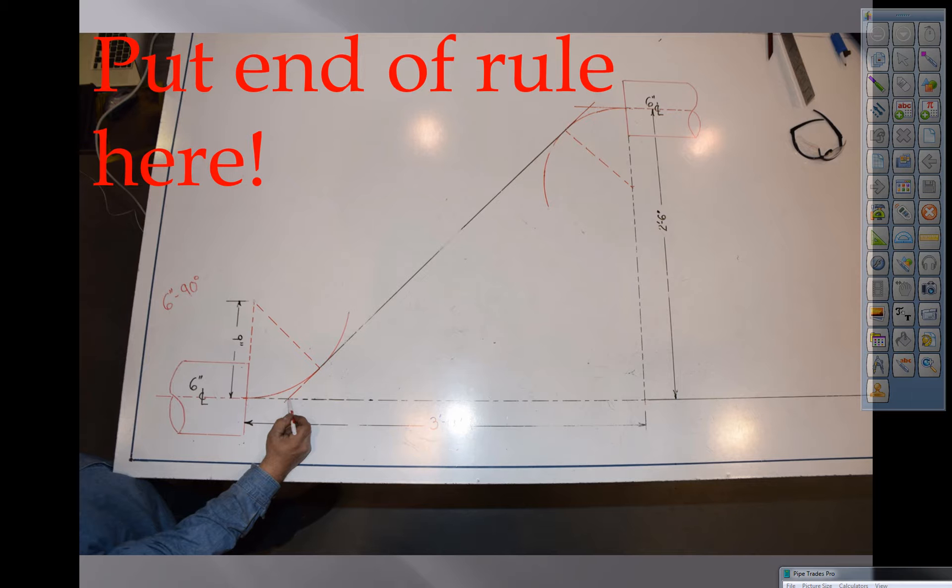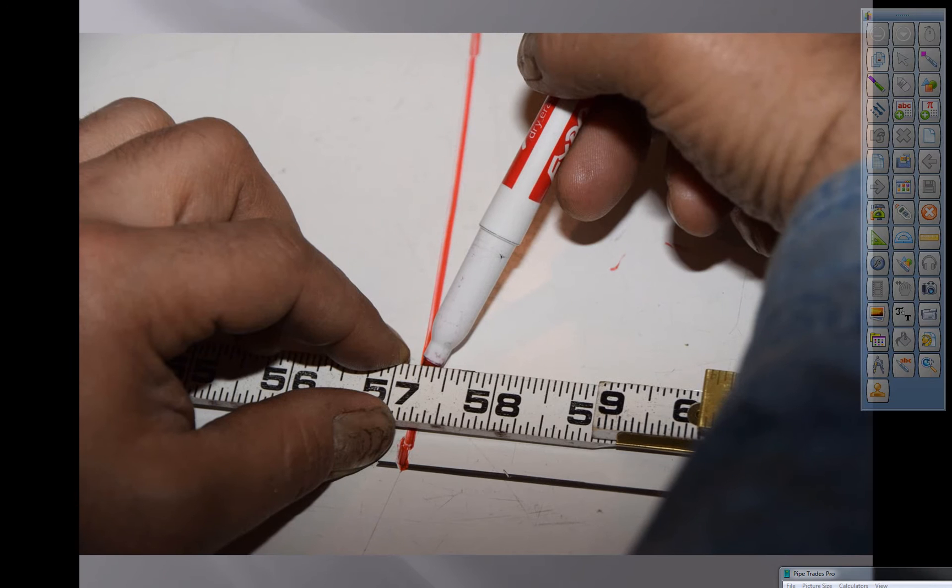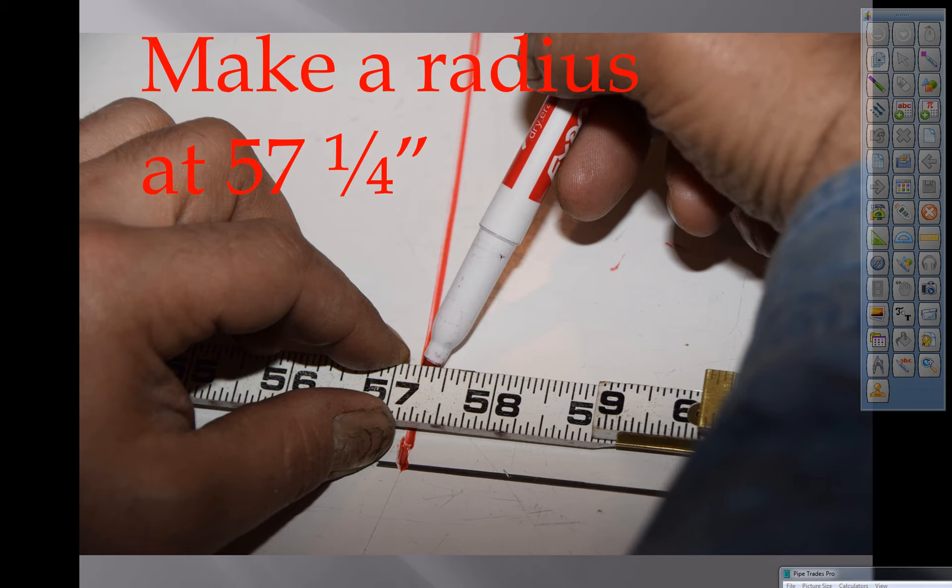We're going to put the end of the rule here, at the vertex where the marking pen is. And we're going to make an arc at 57 and a quarter and we're going to draw that all the way up, making that radius at 57 and a quarter inches.